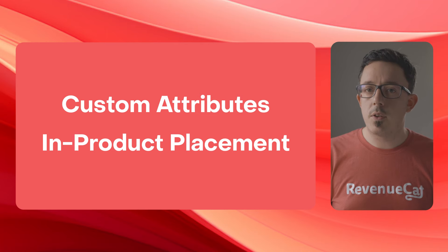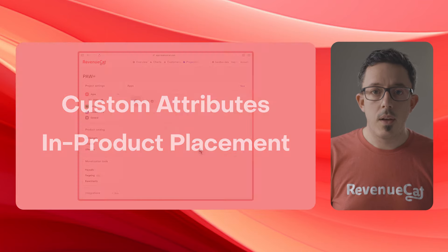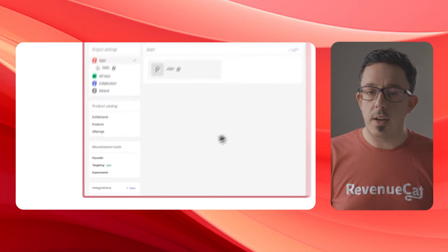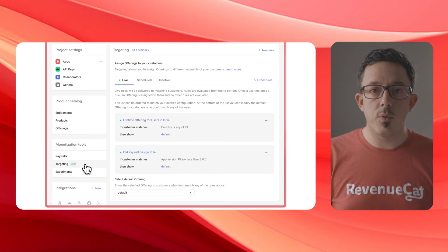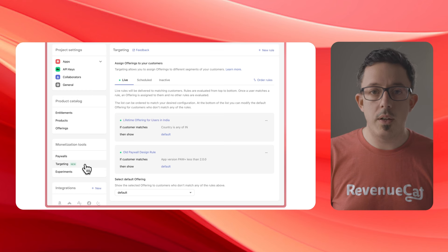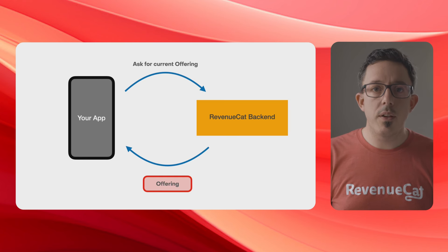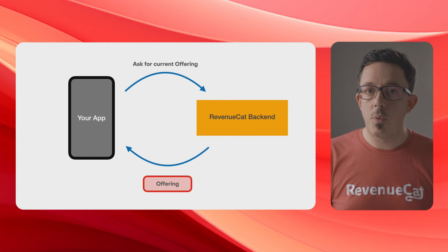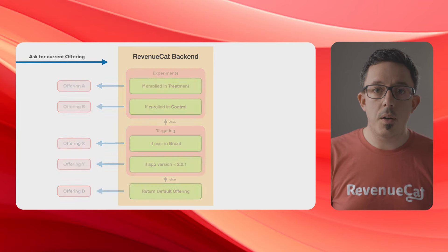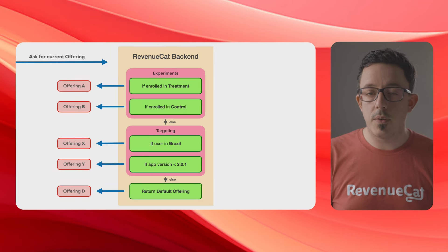To start, let's quickly recap how RevenueCat Targeting works. In the RevenueCat dashboard, there's a section called Targeting, where you can configure a set of rules that control which users see which paywalls in your app. After you've configured these rules, when your app asks the RevenueCat SDK which offering it should show the user, the RevenueCat backend will run through a system like this to determine which offering to return.